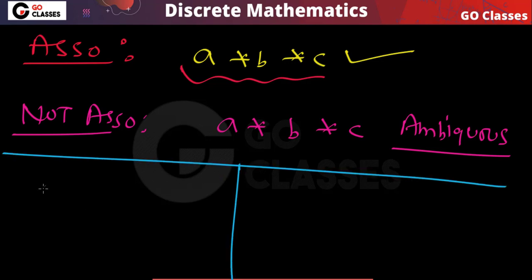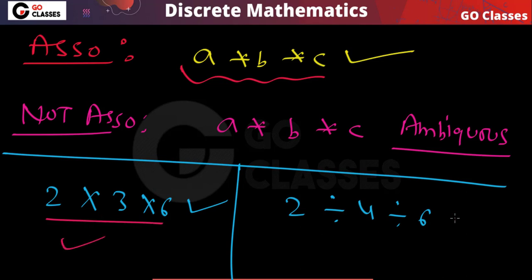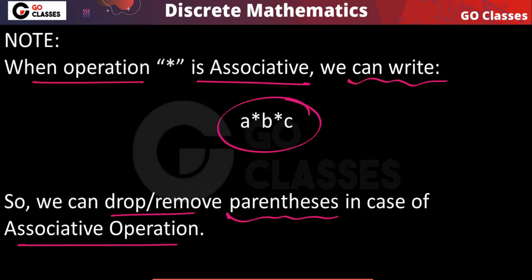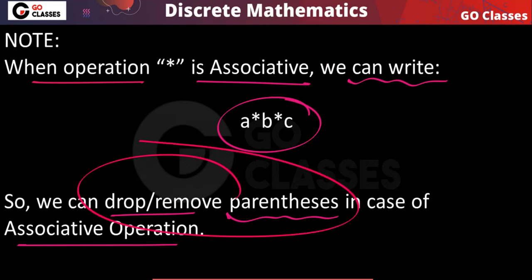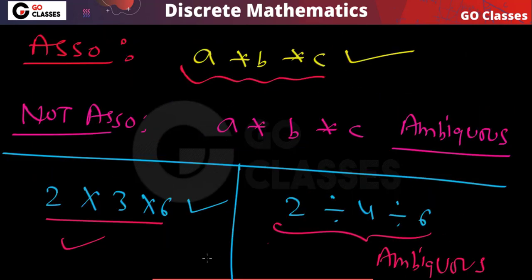For example, you can write 2 multiplied by 3 multiplied by 6 without parentheses — that is correct, there is no ambiguity. But you cannot write '2 divided by 4 divided by 6' without parentheses, because (2 ÷ 4) ÷ 6 gives a different value from 2 ÷ (4 ÷ 6). So if your operation is associative, you can remove the parentheses. If it is not associative, you must include parentheses. In the next video, we will solve some questions on associative and commutative property.